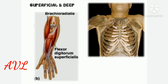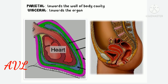Superficial means close to the surface of the body — for example, the epidermis is superficial to the dermis. Deep means away from the surface of the body — for example, the hypodermis is deep to the dermis. Parietal means towards the wall of the body cavity, while visceral means towards the organ.